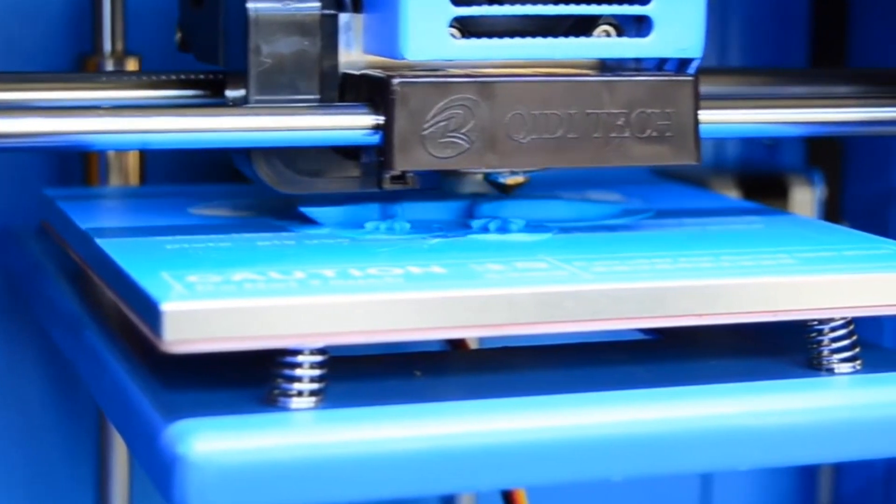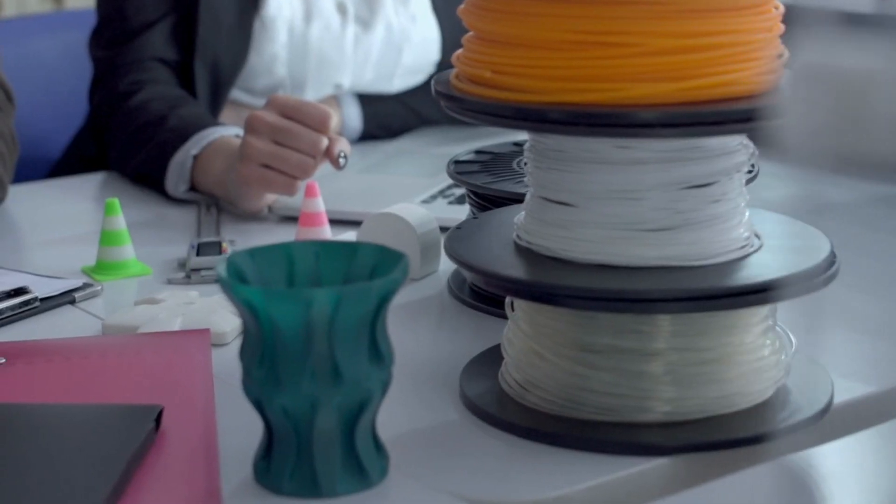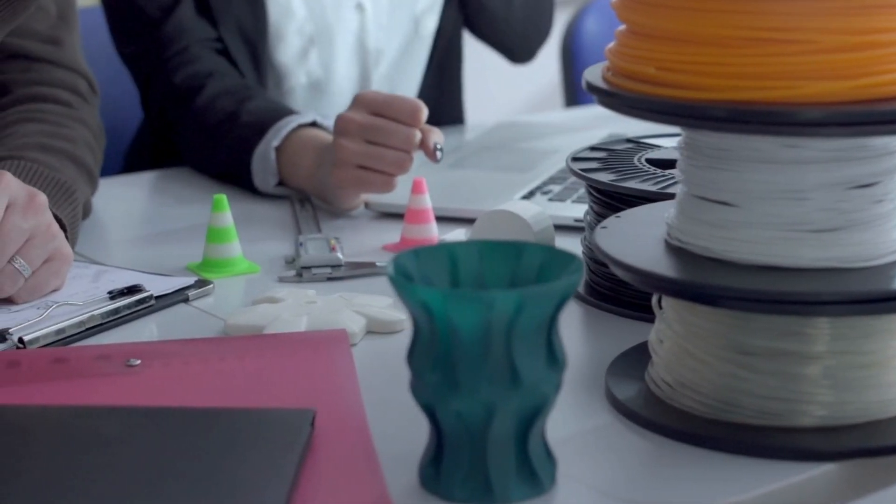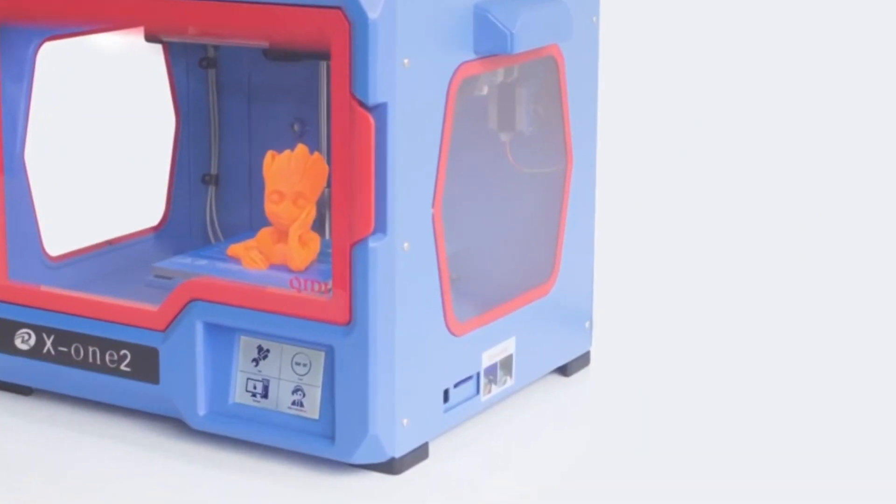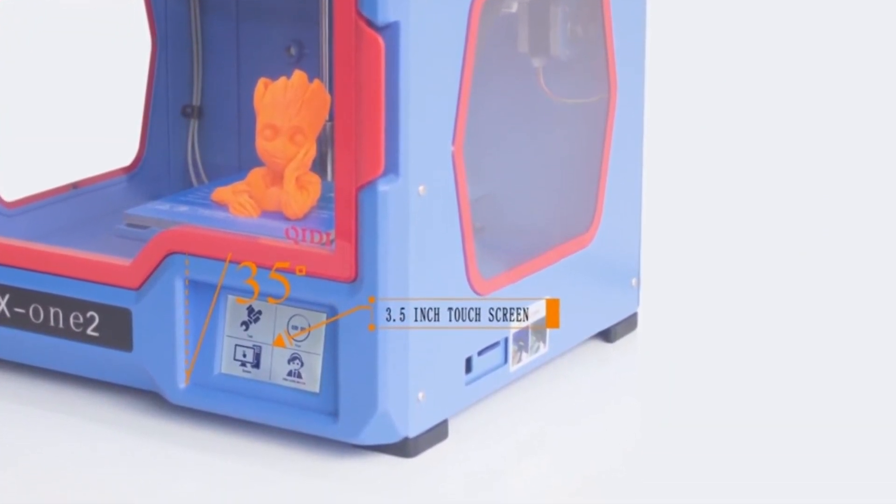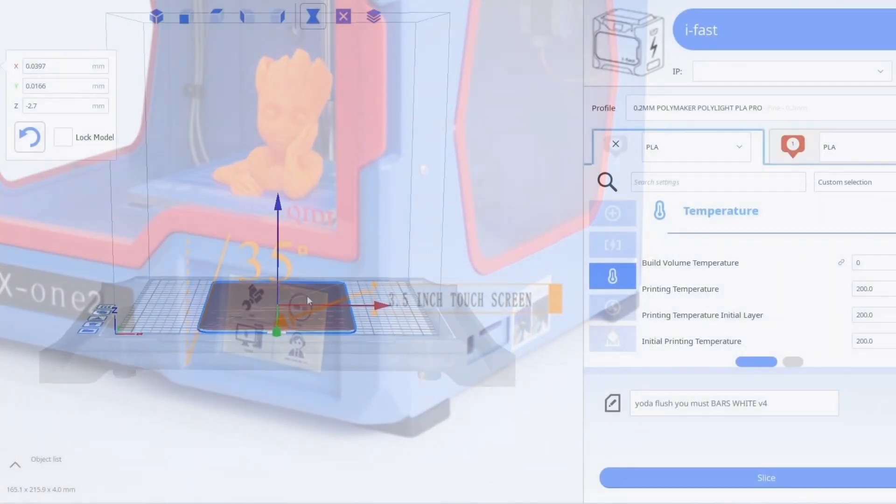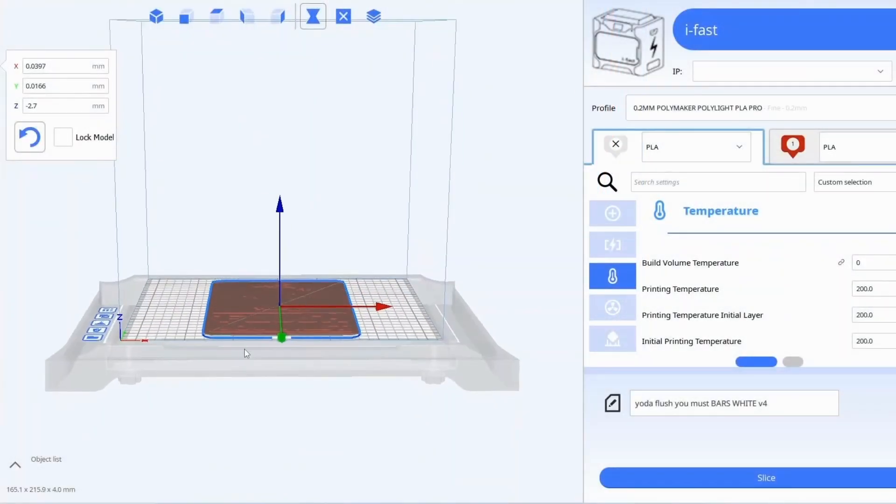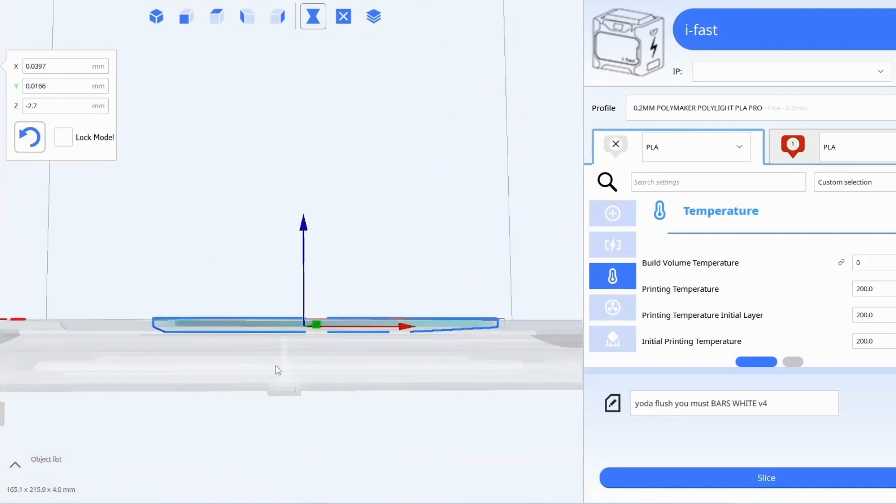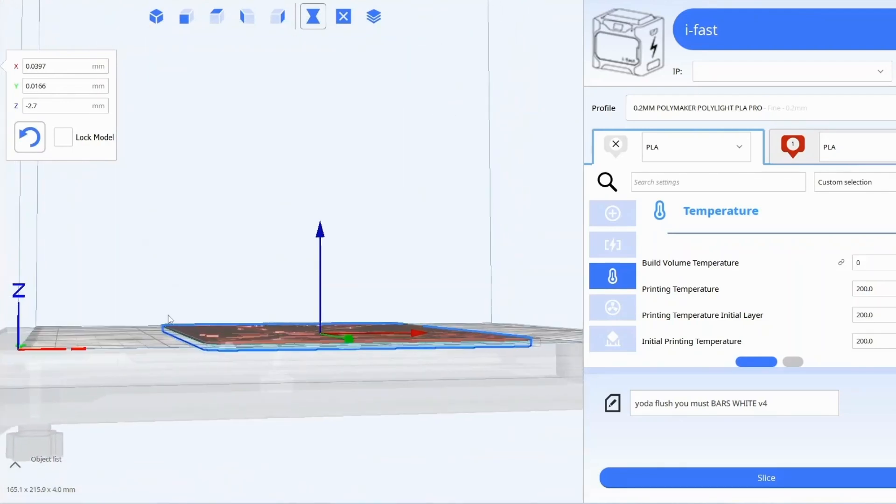This printer supports various filaments, including ABS, PLA, and TPU, thanks to its high-quality aluminum heated platform, which ensures even heating and reduces deformation. The X12 features a 3.5-inch full-color touchscreen with intuitive icons, simplifying the operation process. The printer's self-developed QIDI Print Slicer software offers advanced model segmentation technology, providing a seamless user experience with enhanced print quality.